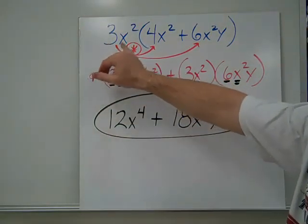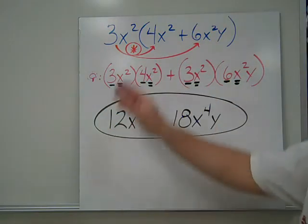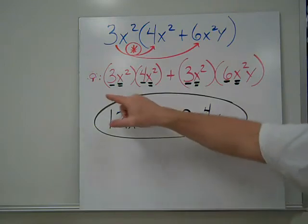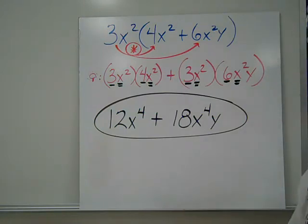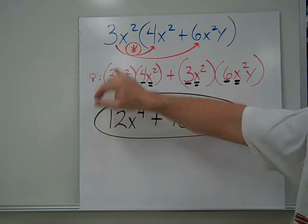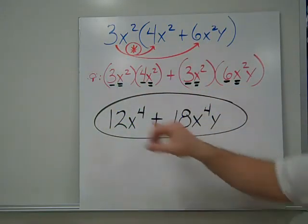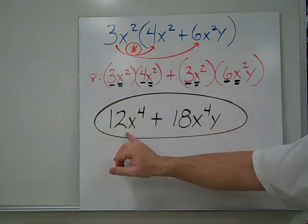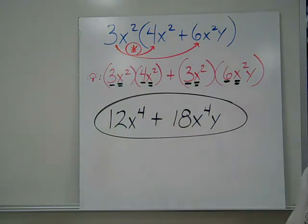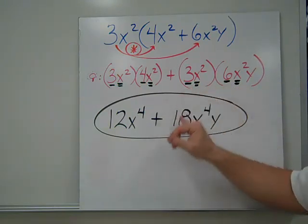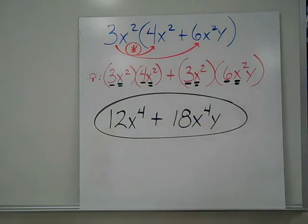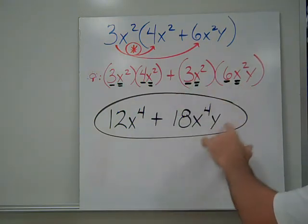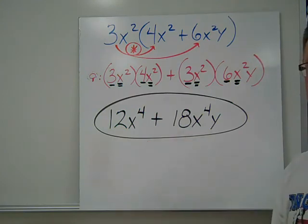One more distributive property example with more letters: 3x squared distributed to 4x² + 6x²y. I'd suggest writing this out the first few times. First term: 3x² times 4x² — numbers give 12, like bases add powers for x to the fourth. Second term: 3x² times 6x²y — numbers give 18, x² times x² gives x to the fourth, and the y comes down since there's no other y. Final answer: 12x to the fourth plus 18x to the fourth y.